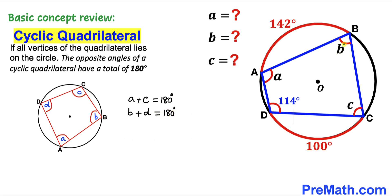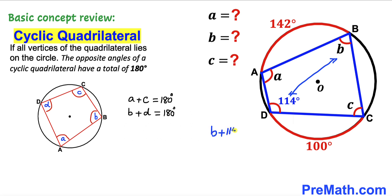Reverting to our original problem: quadrilateral ABCD is cyclic, and interior angle D is 114 degrees. By the cyclic quadrilateral definition, opposite angles B and D must sum to 180 degrees. So B plus 114 degrees equals 180 degrees. Subtracting 114 degrees from both sides gives us angle B equals 66 degrees.